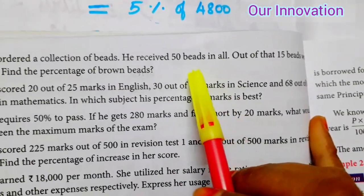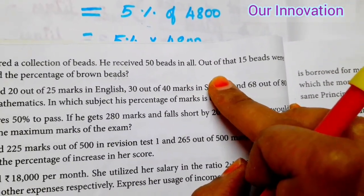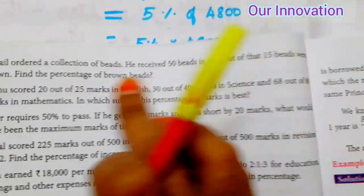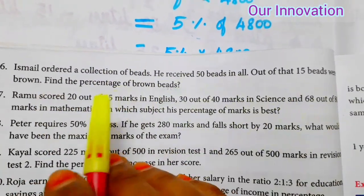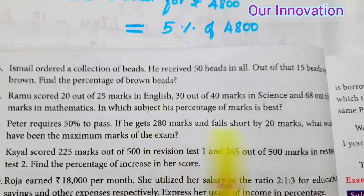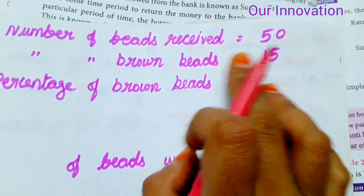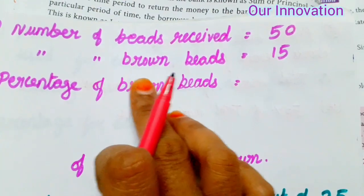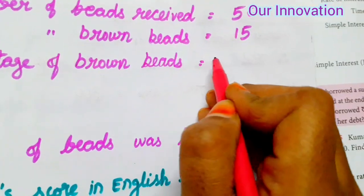So Ismail ordered and received 50 beads in total collection. Out of that, 15 beads were brown. We need to find the percentage of brown beads. Number of beads received is equal to 50. Number of brown beads is equal to 15.